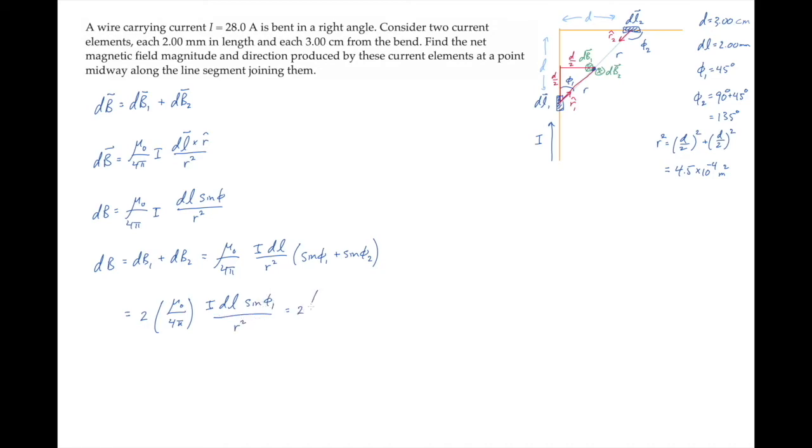Mu naught over 4 pi is 1 times 10 to the minus 7 tesla meter per amp. Substitute the value for the current, the length of the current element, sine of 45 degrees, and then divide by r squared to find that the magnitude of the net field is 1.76 times 10 to the minus 5 tesla. We know from the right-hand rule that its direction is into the screen.